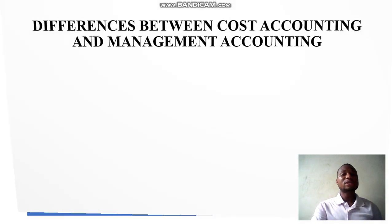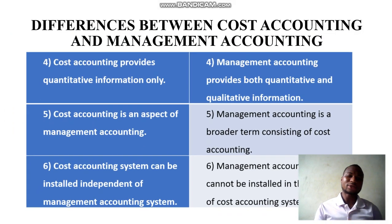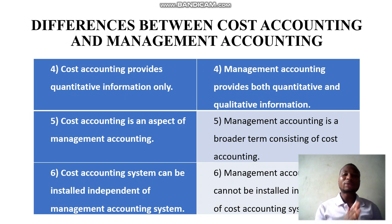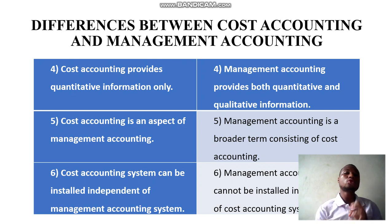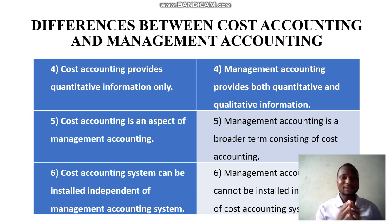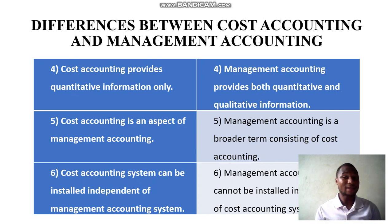Another difference is that cost accounting provides quantitative information — that is, mathematical calculations. But with management accounting, it doesn't just provide quantitative data. It also provides qualitative information, so it is both quantitative and qualitative. The qualitative part is the descriptive component that explains the data. Cost accounting provides quantitative information only, but management accounting provides both quantitative and qualitative.